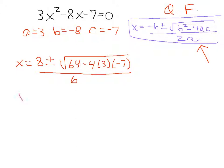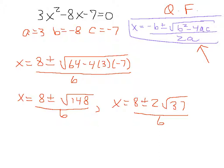So now we do some simplification. x is equal to 8 plus or minus the square root of 148 all over 6. And 148 has 4 as a factor. And so the square root of 4 is 2. And I'm left with the square root of 37. 4 times 37 is 148 over 6.